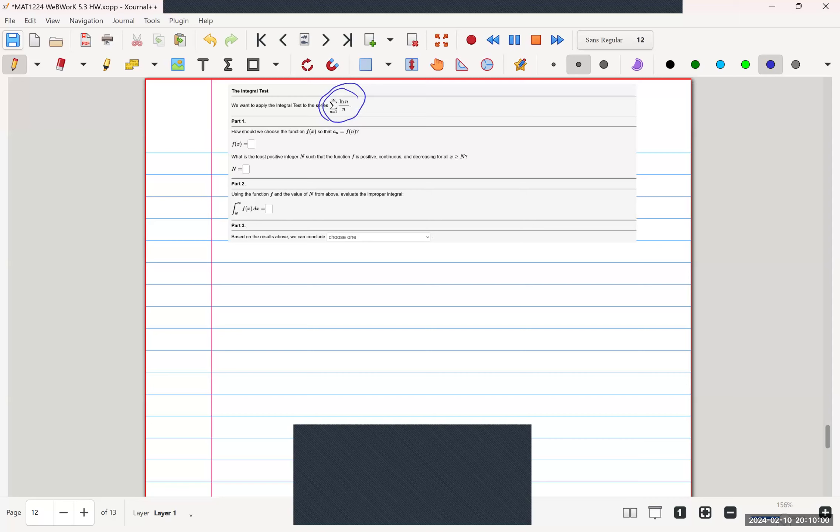As per usual for part 1, we're going to find our f(x), which is just plugging x into our series. So ln(x) over x. We start at 1, so we're going to let n equal 1. That is our part 1.